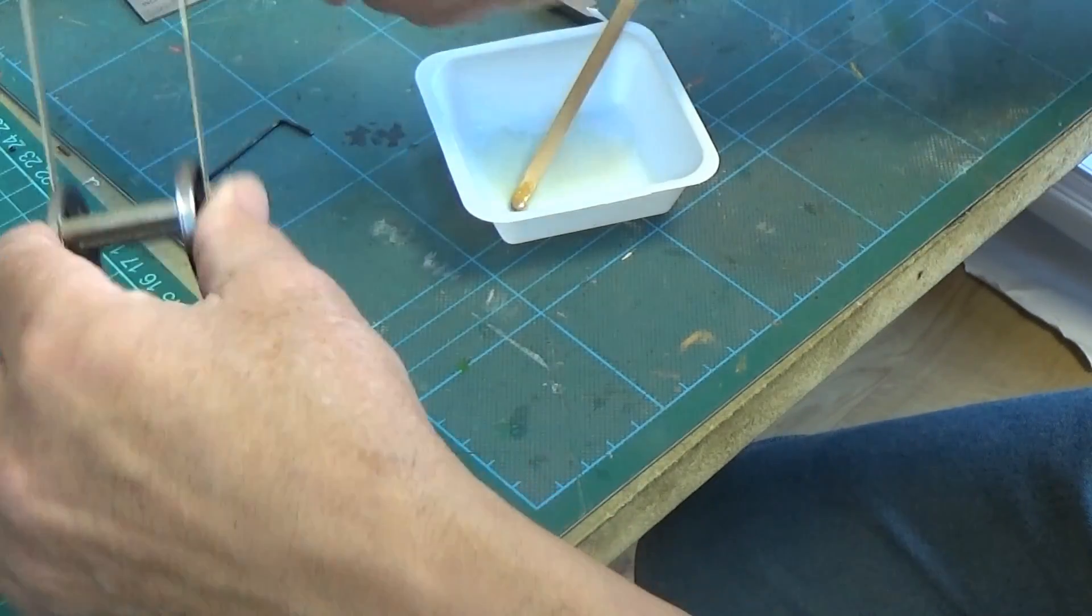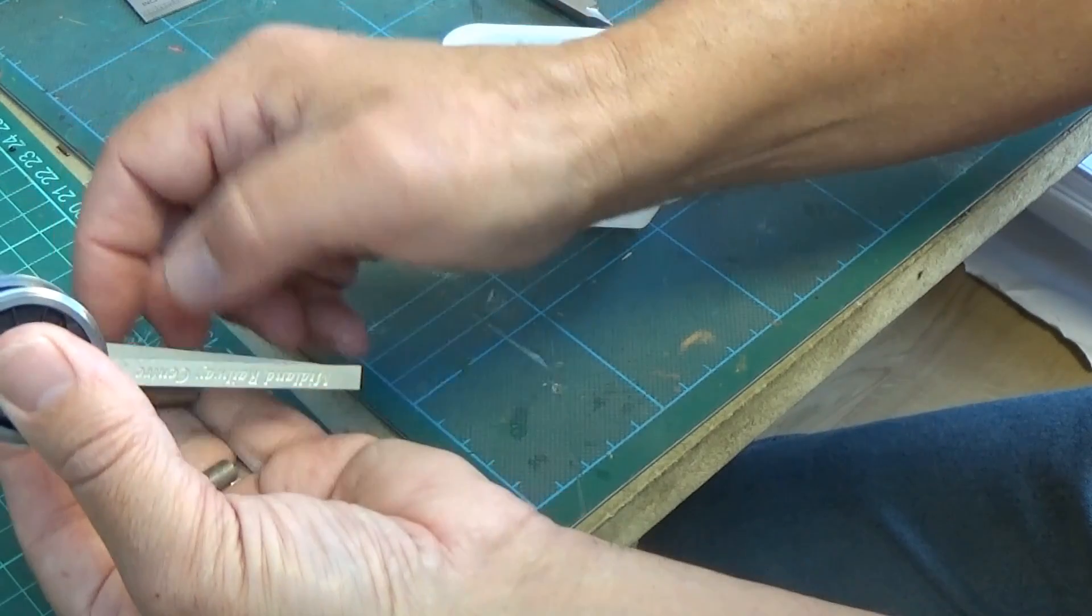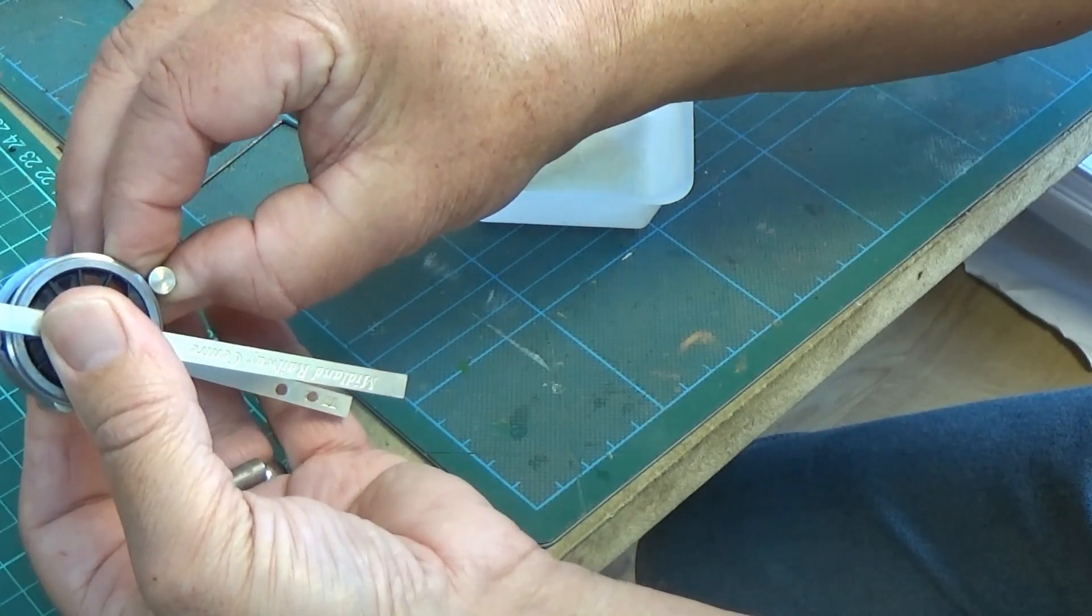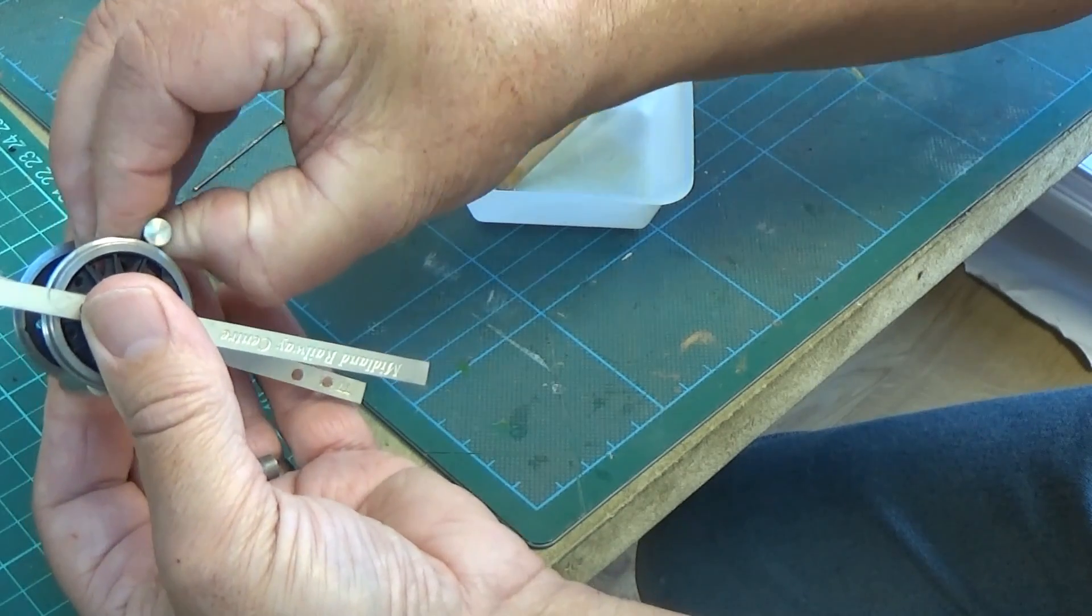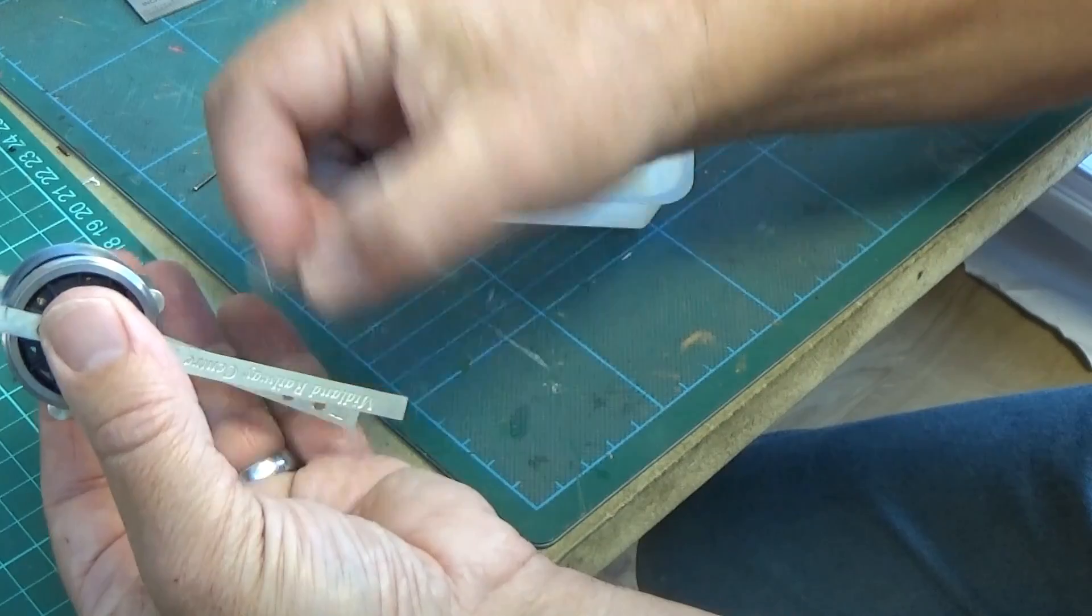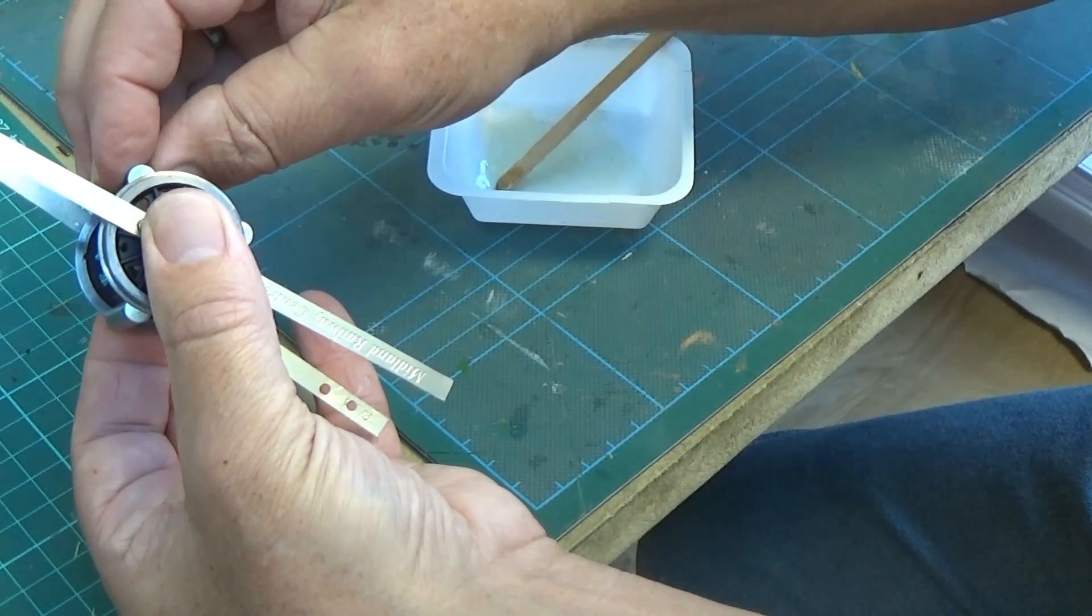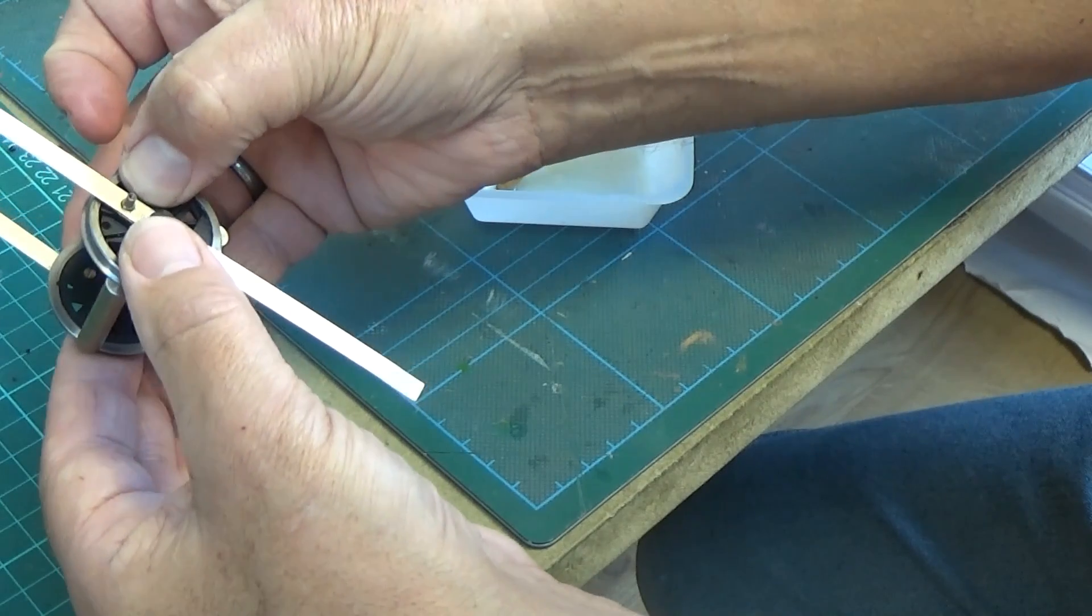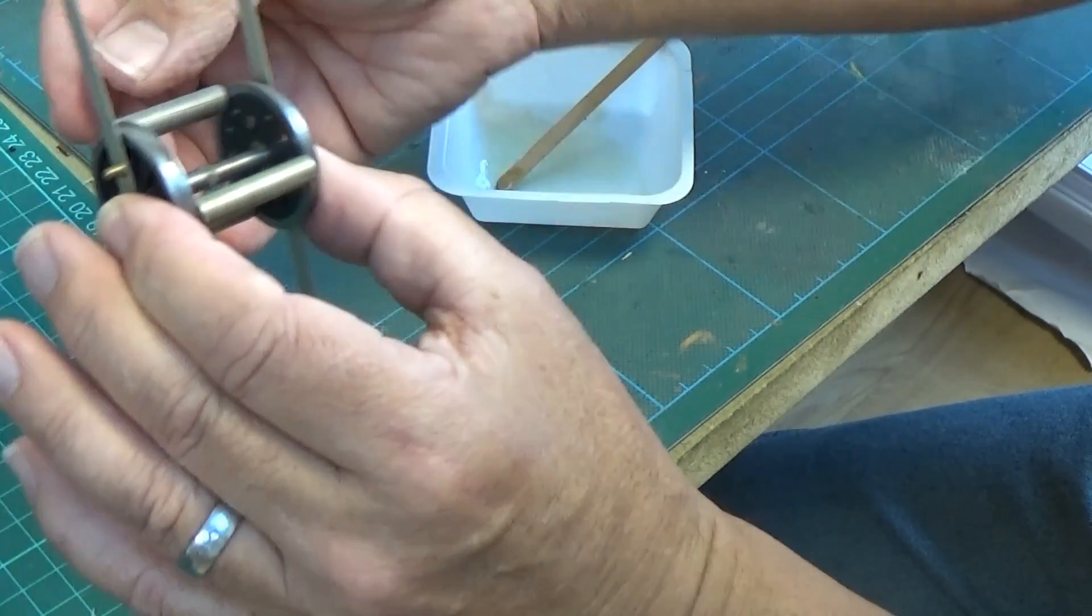So, squeeze them between the wheels, spaced evenly around the rims. Sometimes it can be a little bit difficult to get them in. So that they keep the two wheel rims completely parallel, as you can see there.